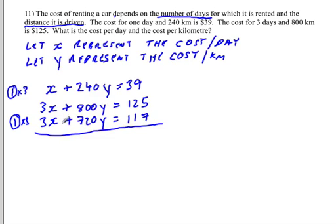And we're going to subtract these two equations. So 3x minus 3x is zero. 800y minus 720y is 80y. And 125 minus 117 is 8. And we divide both sides then by 80. So y is equal to 0.1.